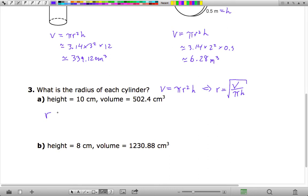So here, r should be equal to the volume 502.4 divided by pi and also divided by 10. And there's what you get. So if you do that carefully, you should get 4 centimeters.